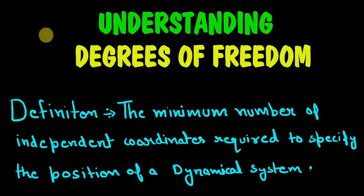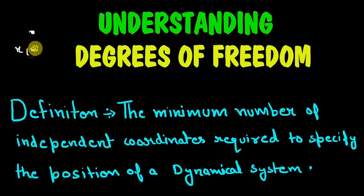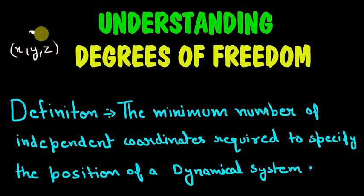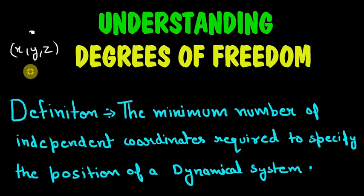For example, if you have a particle moving in three-dimensional space, then you will need x, y, z — that means a total of three coordinates to specify its position. That means the degrees of freedom of this particle are three.